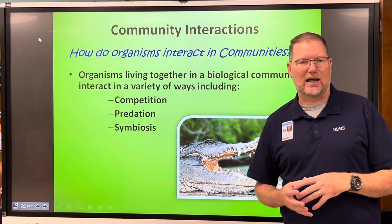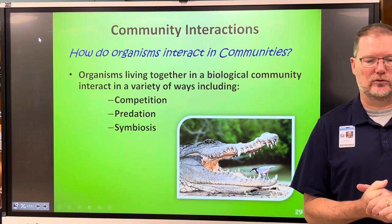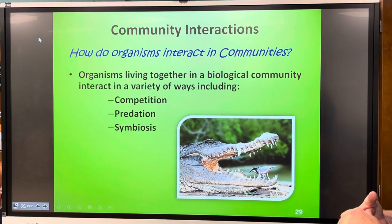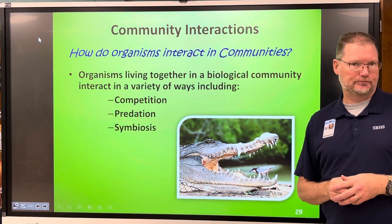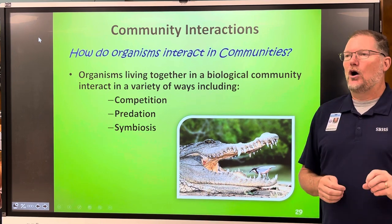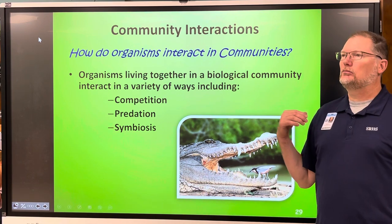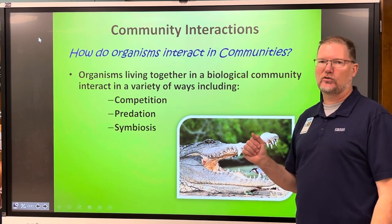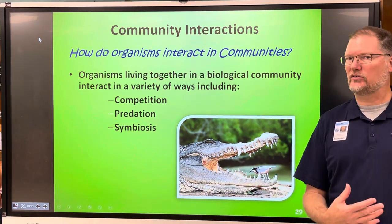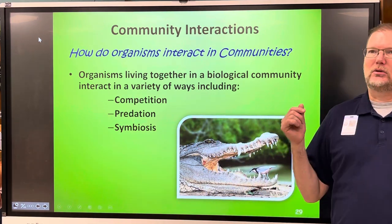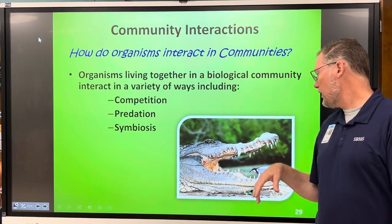Now we're going to be talking about community interactions and how organisms interact in that community. You've learned a little bit about this already, but we're going to go a little deeper. Some of the ways they interact are through competition — that's my home, that's my food, that's my mate, that's my source of water, that's my sunlight — and predation, and then symbiosis, which means living together.